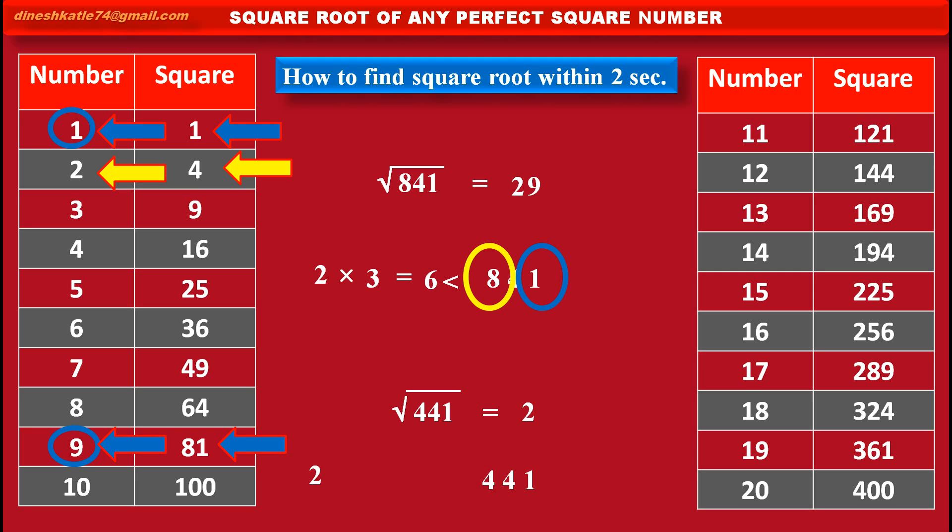Now, second digit number of the answer depends on the last digit, means at the unit place it is 1, so again there are same options 1 and 9. Now, in this case, how we can select 1 or 9 as a second digit? Again, we have to find product of this first digit number 2 and its next coming number 3, which is 6.